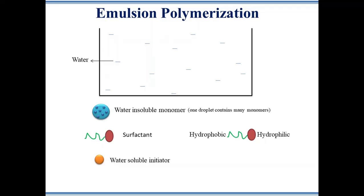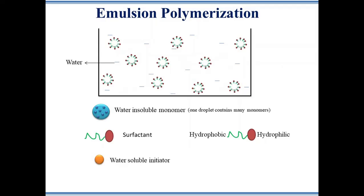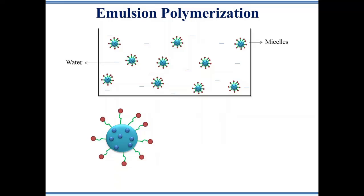In emulsion polymerization, water is taken as the continuous phase, which contains water-insoluble or hydrophobic monomers like oil. An emulsifier or surfactant is added to form a monomer-in-water emulsion. In the emulsion, surfactant surrounds the monomer droplets and forms a micelle structure. Surfactants have a hydrophilic head and a hydrophobic tail. Their hydrophobic tail faces the monomer and the hydrophilic head is in water. Each monomer droplet contains many monomer molecules. As the initiator enters the droplet through the aqueous phase, it initiates polymerization in each micelle.